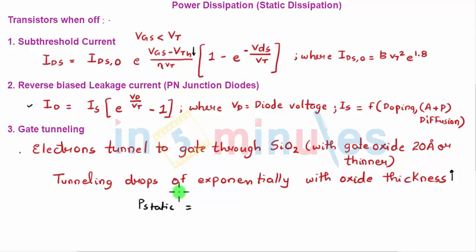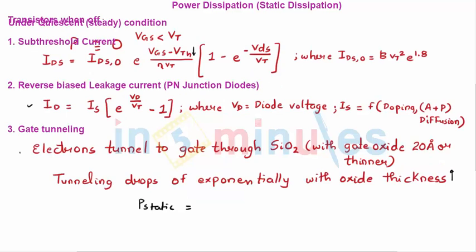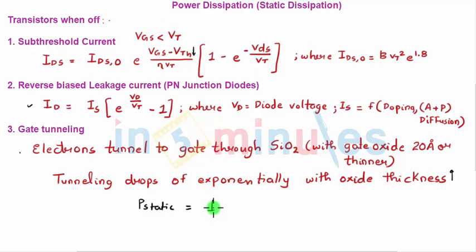There is no direct path from VDD to ground, so that current was zero in quiescent condition. Now P-static is nothing but I-static into VDD, and I-static is nothing but leakage currents, which is either subthreshold or reverse bias or gate tunneling. Ideally, it's the summation of all three of them.